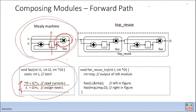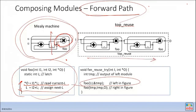When composing multiple modules together with a simple forward path, you evaluate from left to right, following the data flow, because there is a data dependency. You follow the original data dependency order: take input i, generate temp, then the second module takes temp and produces the output.